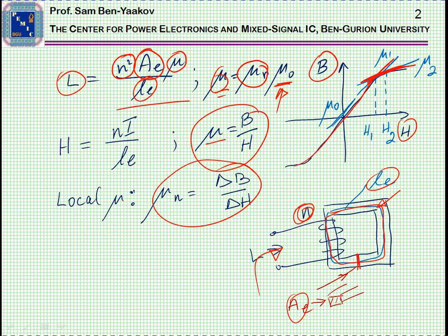Due to the shape of this curve, which reaches saturation at a given B value, the slope is changing, and consequently, in this equation, mu is changing, and therefore, L will change.